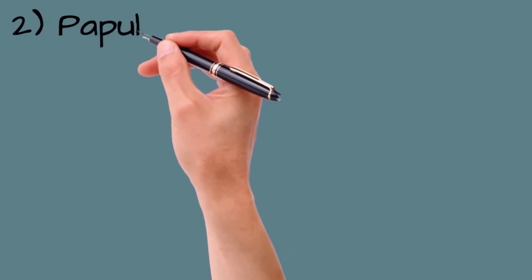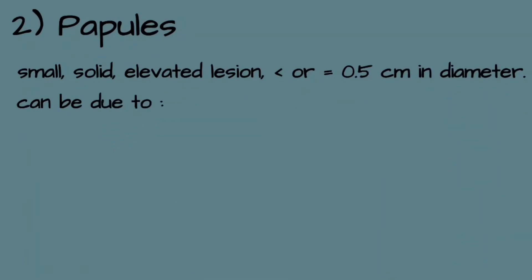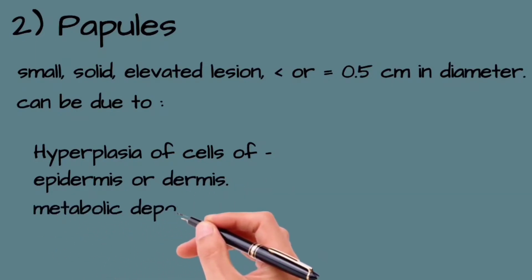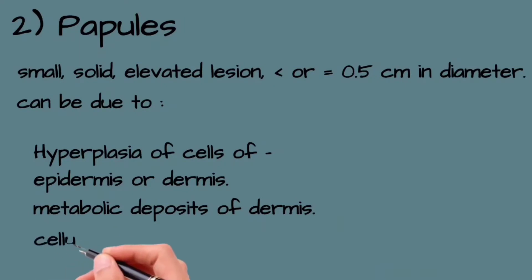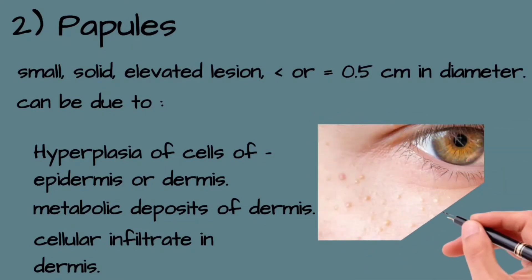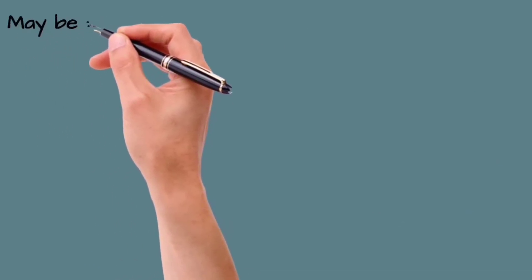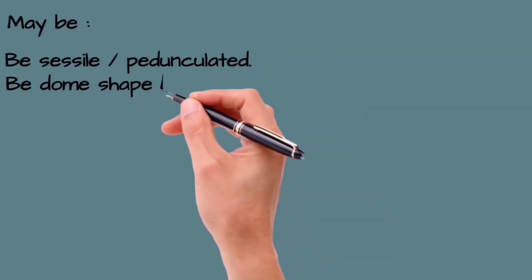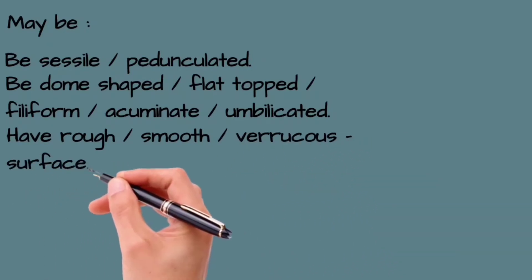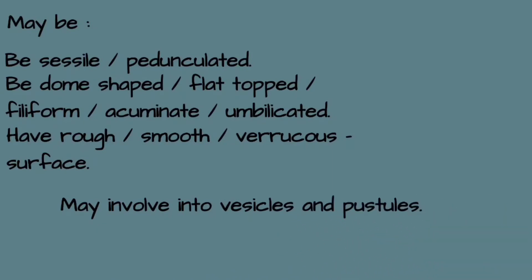Papules are small solid elevated lesions less than or equal to 0.5 cm in diameter. They can be due to hyperplasia of cells of the epidermis or dermis, metabolic deposits in dermis, or cellular infiltrate in dermis. Papules may be sessile or pedunculated, dome-shaped, flat-topped, filiform, acuminate, or umbilicated, and may have a rough, smooth, or verrucous surface. Papules may evolve into vesicles and pustules, or may be surmounted by scales as in papulosquamous disorders.